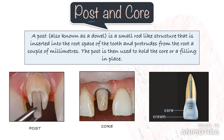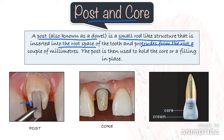First, let us understand the terms post and core. A post, also known as a dowel, is a small rod-like structure that is inserted into the root space or the radicular portion of an endodontically treated tooth, and it generally protrudes a couple of millimeters above the root. This post is then used to hold the core or a filling in place. The core basically replaces the missing coronal structure and it retains the final restoration or the crown.